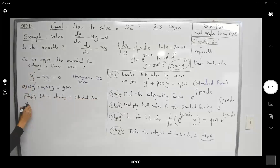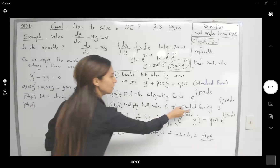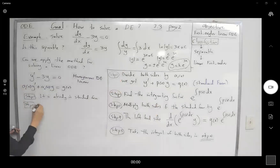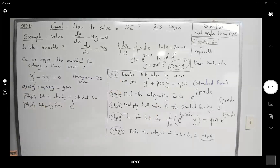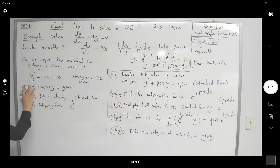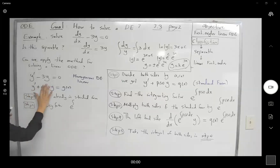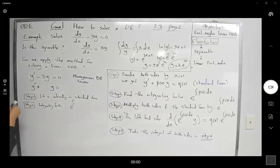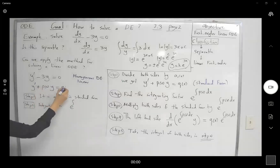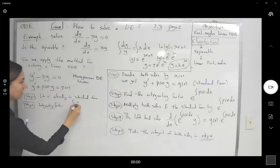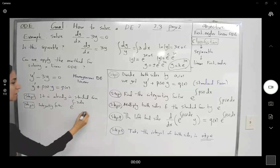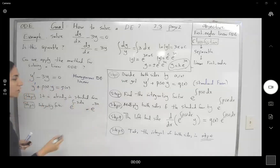Step two: find the integrating factor. The integrating factor is e to the integral of p(x) dx. Since it's already in standard form, p(x) is just −3. So the integrating factor is e to the power of the integral of −3 dx, which equals e^(−3x).